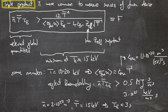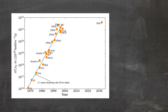Let's have a brief overview and look at n·T·τ_e — the triple product — as a function of year. Here I've plotted the triple product as a function of time, where each dot represents an experiment. These are all tokamaks, and you can see a strong increase over time until the year 1997, with a 1.7-year doubling rate. Note there's a logarithmic scale.